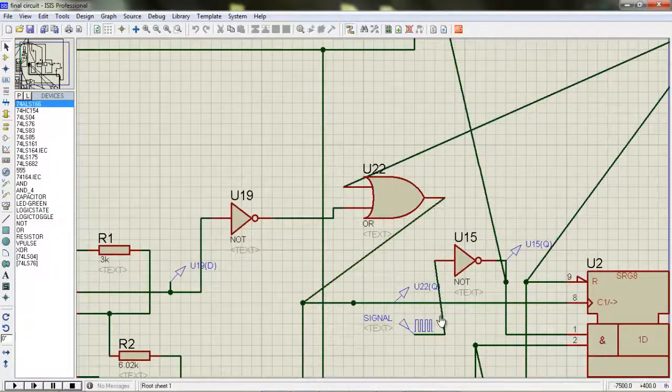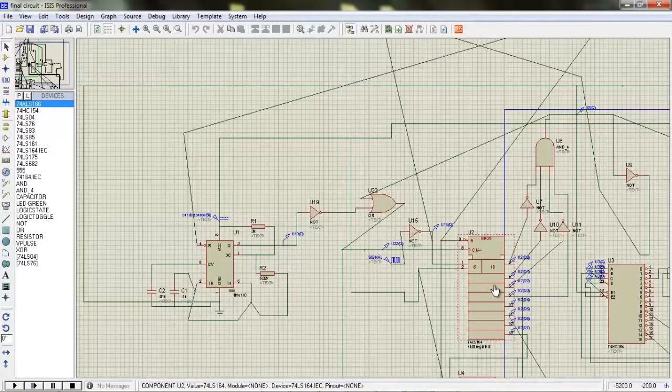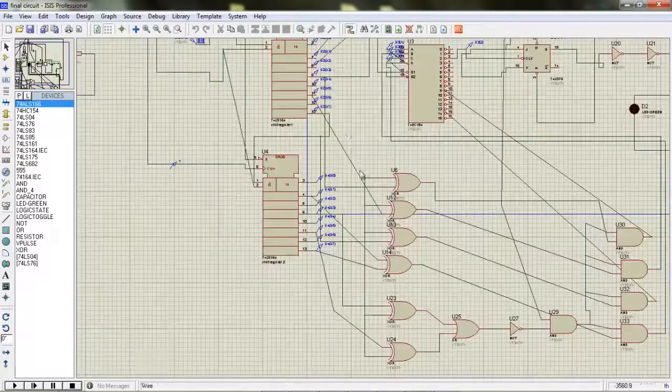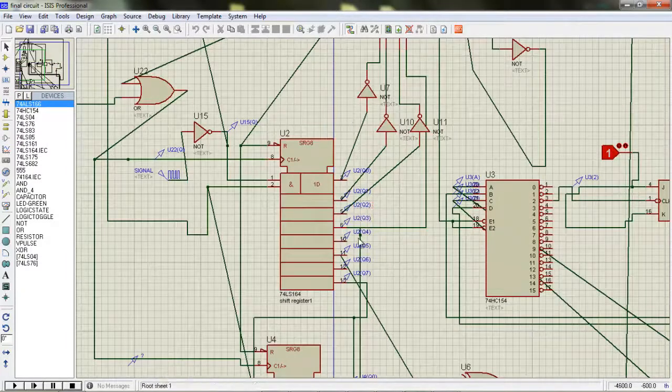As it becomes 1, OR gives output 1 and the clock stops passing. So the shift register stores the value it receives at that moment.